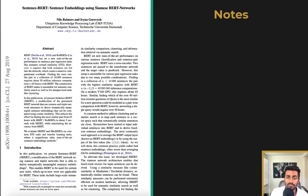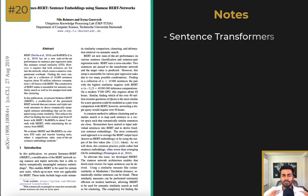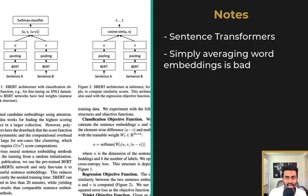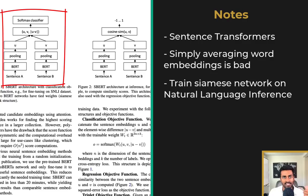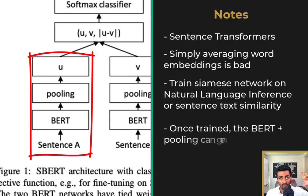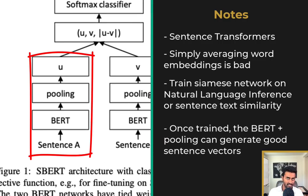Next up is Sentence-BERT: Sentence Embeddings Using Siamese BERT Networks, which introduces sentence transformers. BERT and GPT produce high quality word embeddings, but how do you get sentence embeddings from them? Simply taking the average of word embeddings isn't very high quality. Instead, we train a Siamese network of BERT with a pooling layer on tasks such as natural language inference — checking if one sentence entails, contradicts, or is neutral with respect to another — and sentence text similarity, where we measure how similar two sentences are to each other.